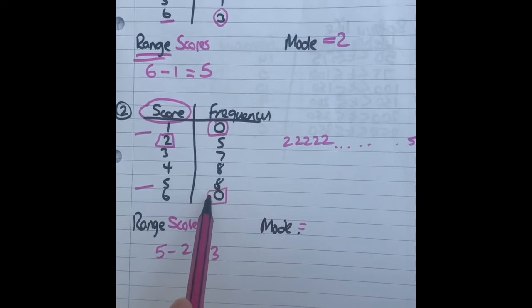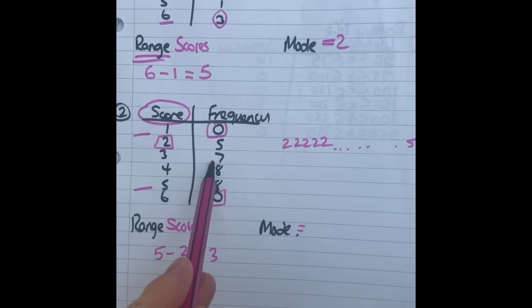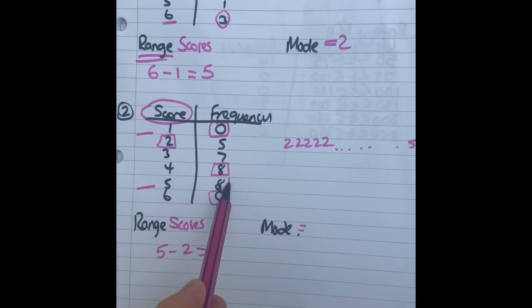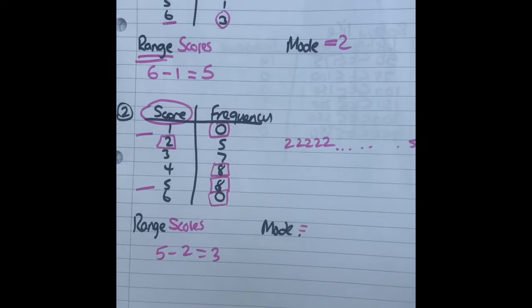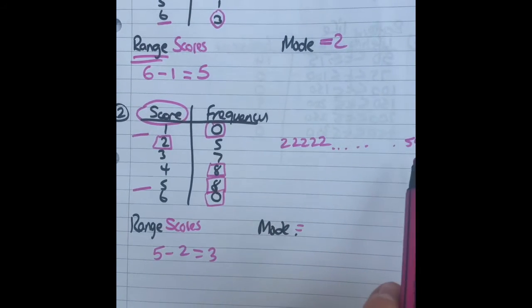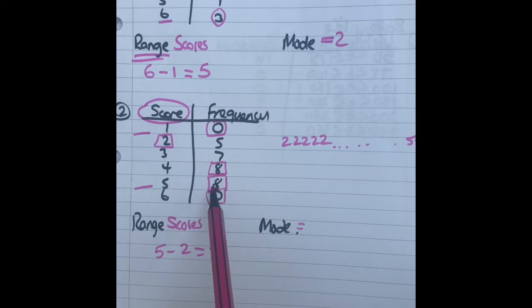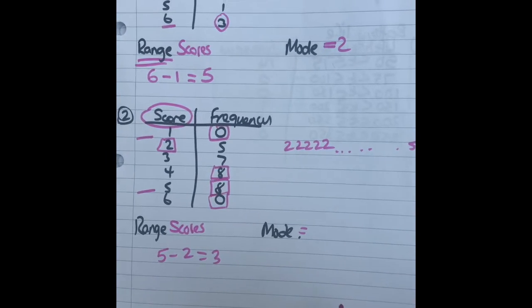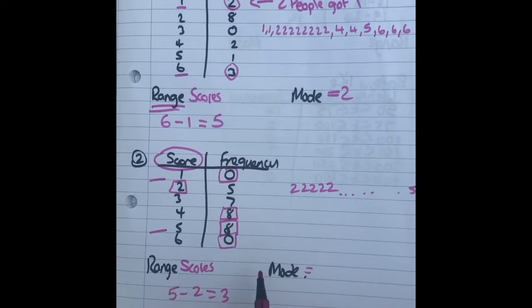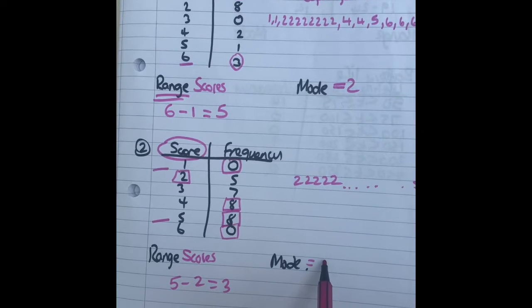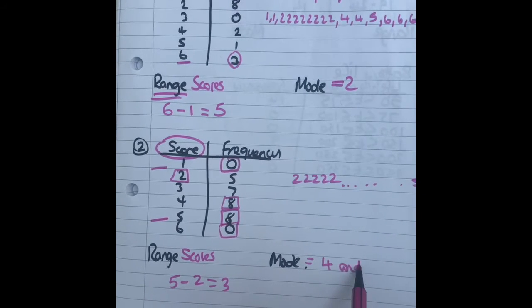Mode means most common, so which one's the most common? In this case there's two numbers that have got the highest number of them. If we did our list we'd have eight fours and eight fives. So you can have two modes, therefore the mode is four and five.